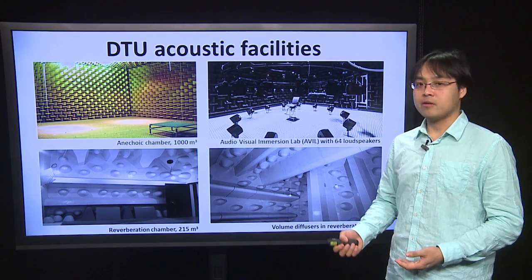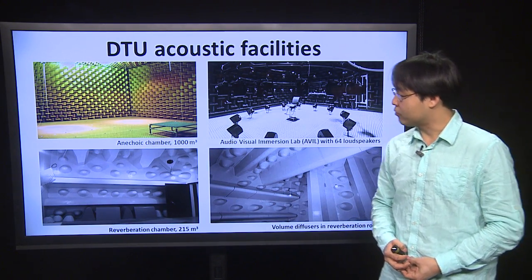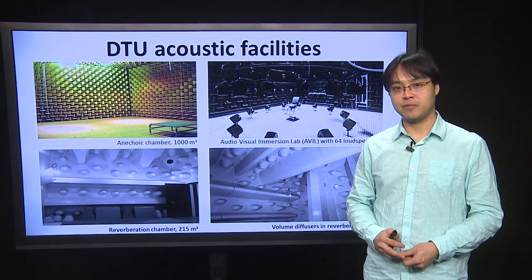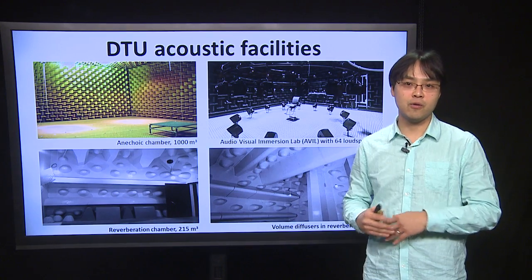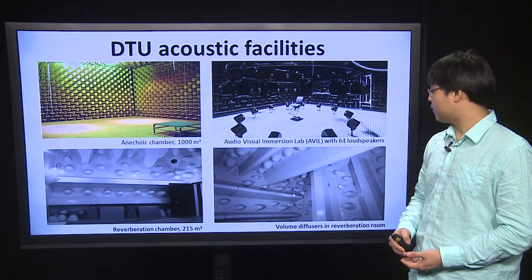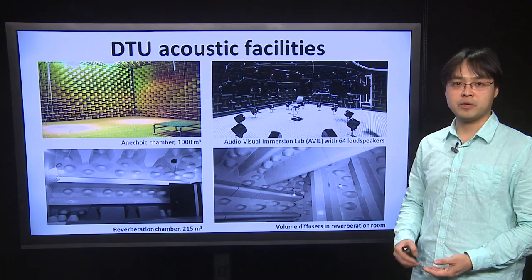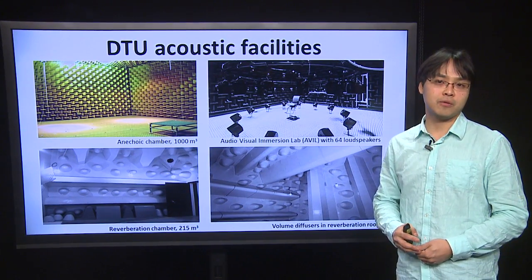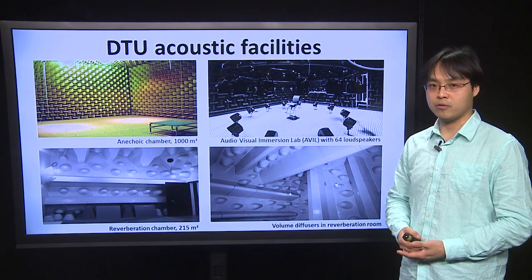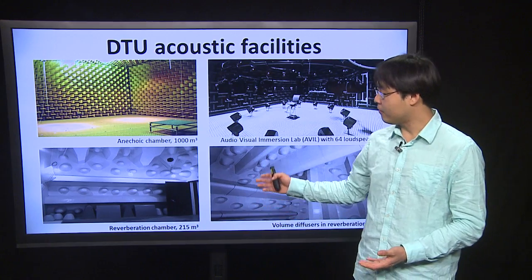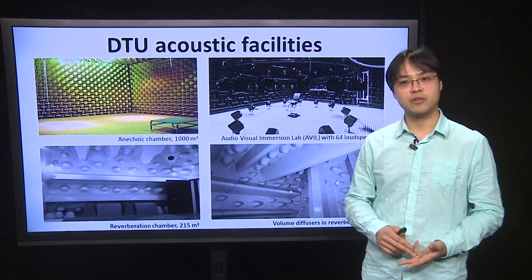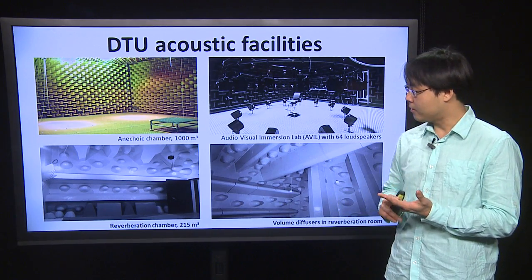DTU has excellent acoustic facilities. We have one big anechoic chamber of 1,000 cubic meters with a cutoff frequency of 50 hertz, meaning there is no reflection from the wall above this frequency. We have another anechoic chamber with 64 loudspeakers where we can reproduce any kind of acoustic scenes by means of simulations and multi-channel recordings. We also have four reverberation chambers where we can measure absorption coefficients, scattering coefficients, sound transmission, and sound power.